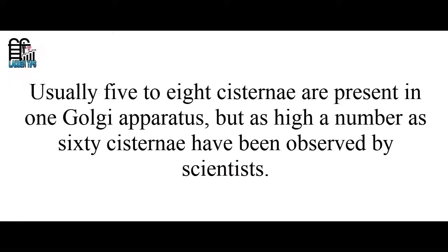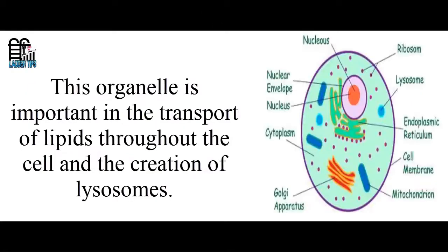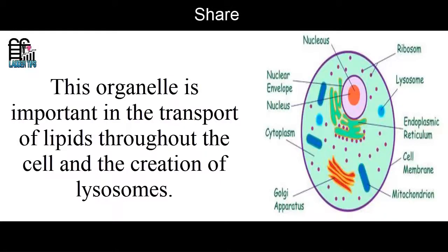Usually 5 to 8 cisternae are present in one Golgi Apparatus, but as high a number as 60 cisternae have been observed by scientists. This organelle is important in the transport of lipids throughout the cell and the creation of lysosomes.